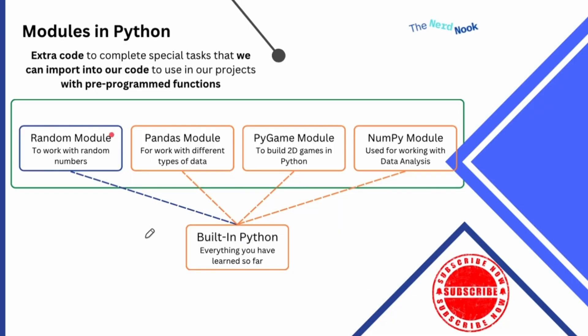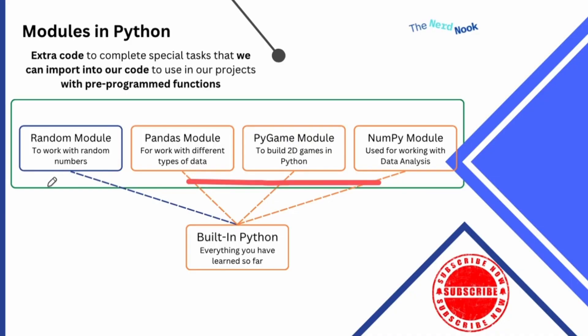There is a module called the random module — you could use this to work with random numbers. You may have heard of Pandas, which is for working with data and data types. Pygame is used to make 2D games in Python, as well as NumPy, which is an incredibly popular module for data analysis. These are all frameworks — extra Python code built for a specific task that we can import and use. Three are shown as external, and one in blue is built-in. Python has built-in modules that you still have to import, but you don't need to install onto your local system. There's math, time, random, OS, and more. The others you'll have to install because they're meant for a specific task and they're pretty package-heavy.